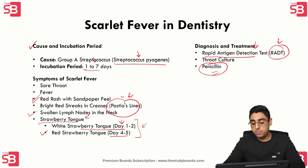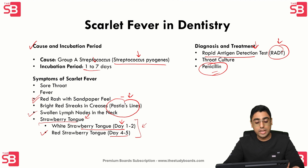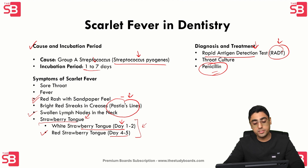The key points to remember are: strawberry tongue, Pastia's lines, and the sandpaper-like rash. That covers scarlet fever. We will cover the next topic in bacterial infections in the next video — until then, take care.